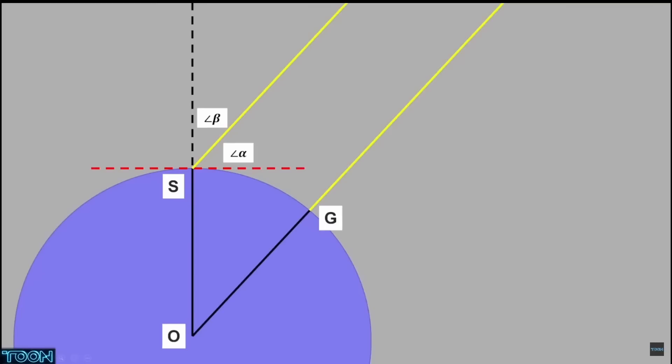So those two yellow lines are parallel. What we can do is move that angle beta down to be at the center of the Earth. And now what we have is a sector of a circle.